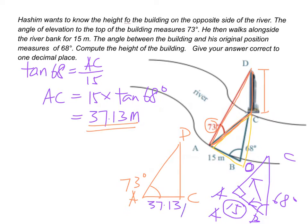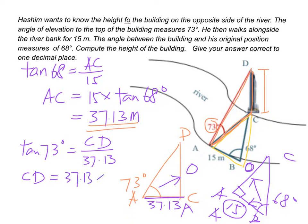So 37.13 is adjacent and the height of the building is opposite. So we have adjacent, we have degrees, we want to find opposite. So again we are going to use tangent. Tangent 73 degrees is opposite CD, which is the height of the building, over adjacent here, AC, 37.13. And with the help of a calculator we will get 121.4 meters.